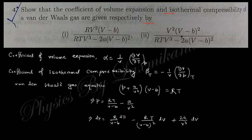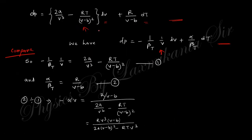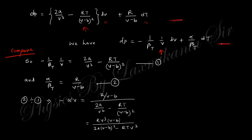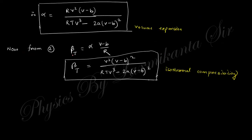The small change in pressure dP = R·dT/(V - b) plus terms in dV. Taking derivatives with respect to V and T gives this dP expression. This can be compared to the general thermodynamic result dP = (∂P/∂T)dT + (∂P/∂V)dV, allowing identification of the partial derivatives. Dividing appropriately gives alpha, and using alpha gives beta_T.